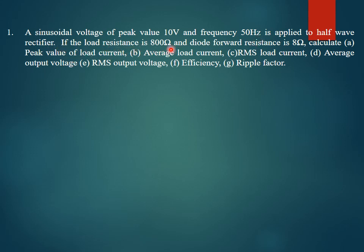Given that the load resistance is 800 ohms and the diode resistance is 8 ohms, we need to calculate the peak value of load current, the average load current (IDC), the RMS load current (IRMS), the VDC, the average output voltage, RMS output voltage, efficiency, and ripple factor.